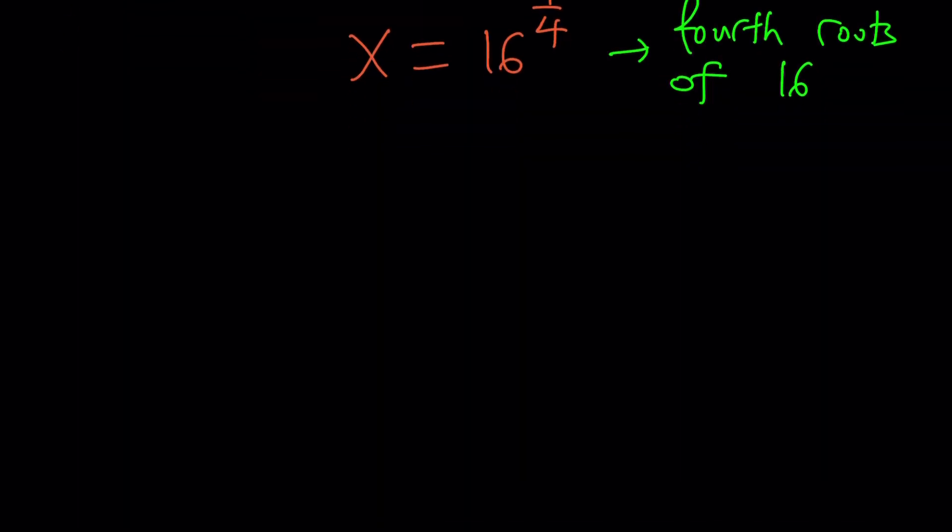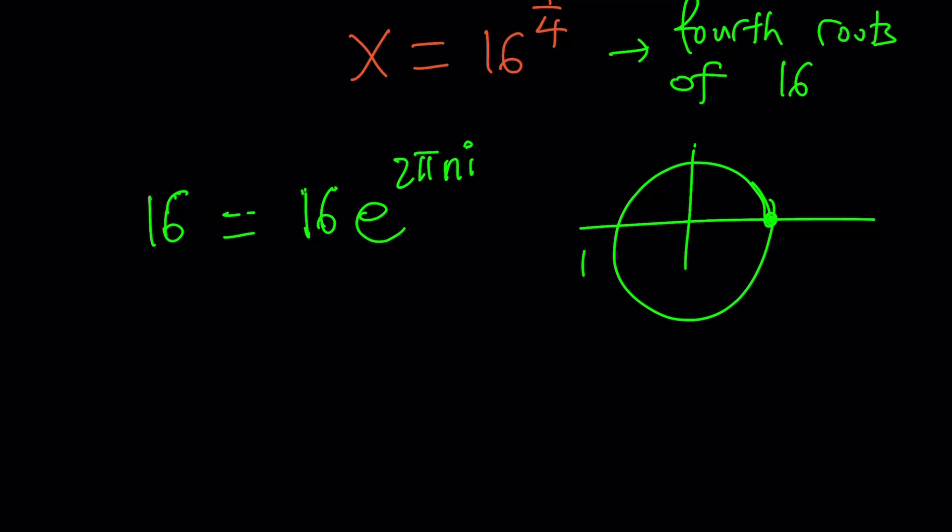How do you find it? Well, if you can write 16 in polar form using the Euler's formula, 16 is basically 16 times e to the power 2 pi ni, right? Because 2 pi ni basically represents 1 on the complex plane. Even though there are multiple values, they all represent the same number, right? You can use 2 pi, 4 pi. Any multiple of 2 pi is going to do. N is an integer, of course. So we can write 16 that way.